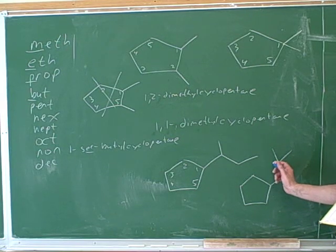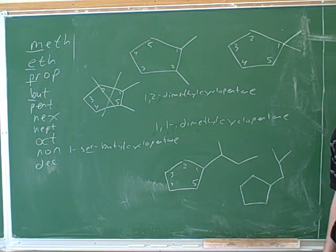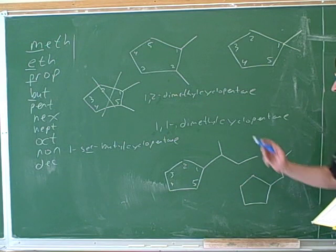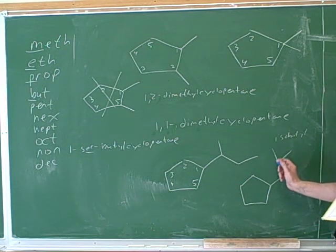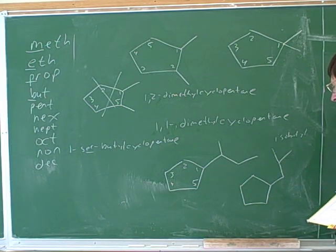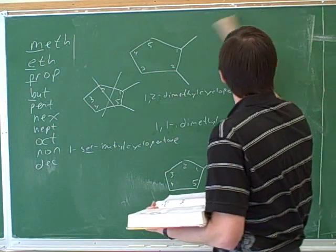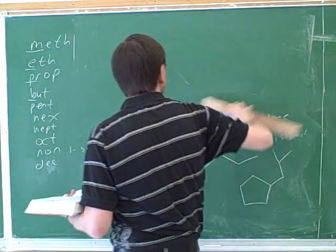This would be isobutyl. Okay. So maybe it's good to have in one place on your paper the difference between isobutyl and sec-butyl. Isobutyl is when the end of the chain is splitting into two methyl groups. This would be isobutyl, and this is sec-butyl.